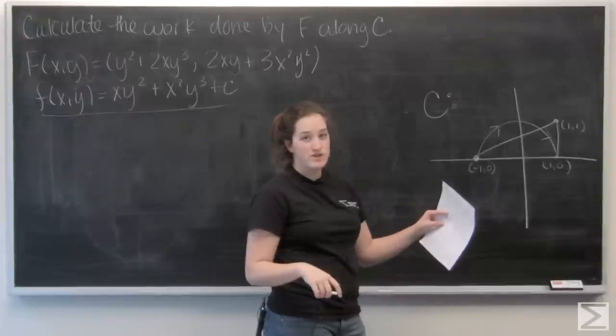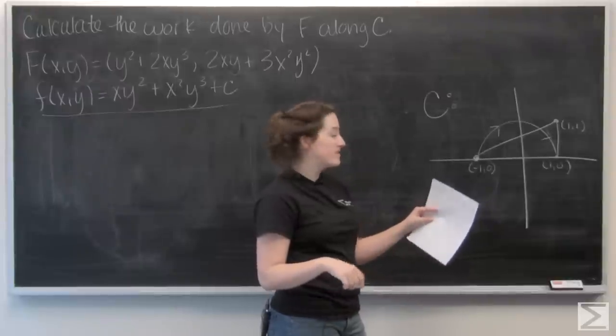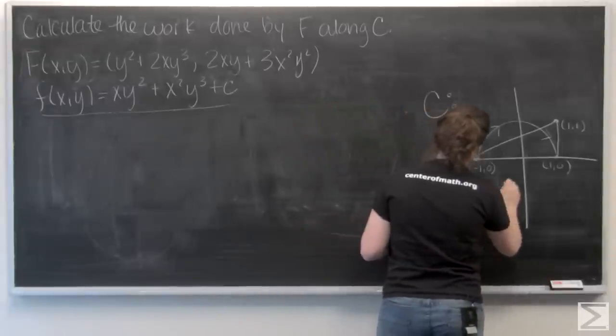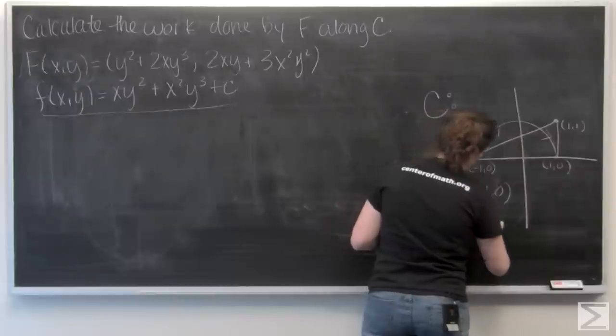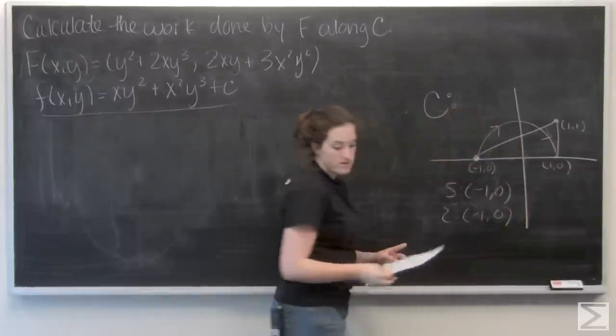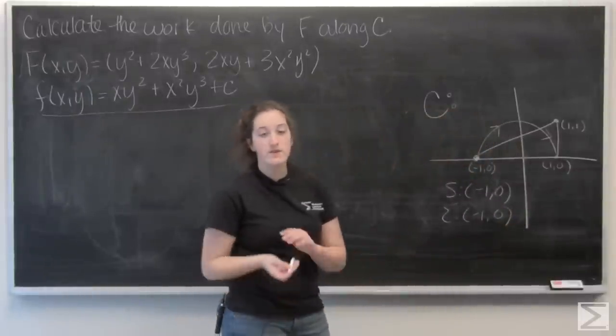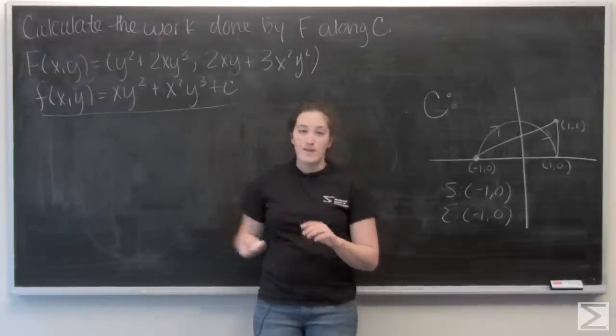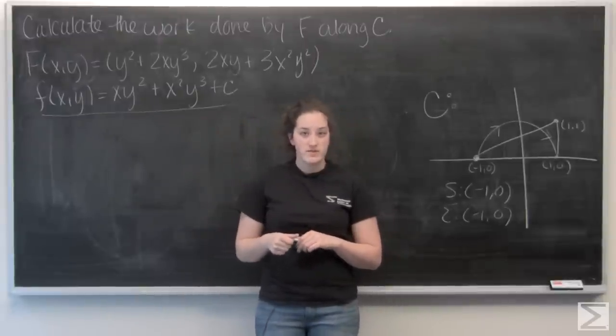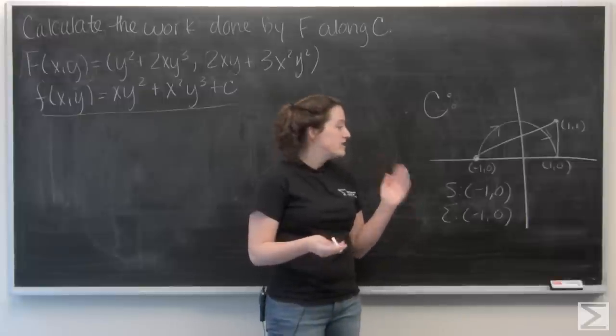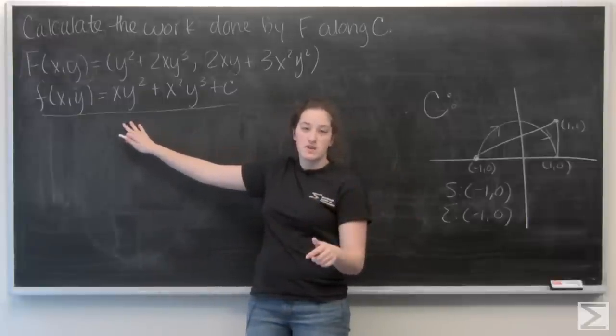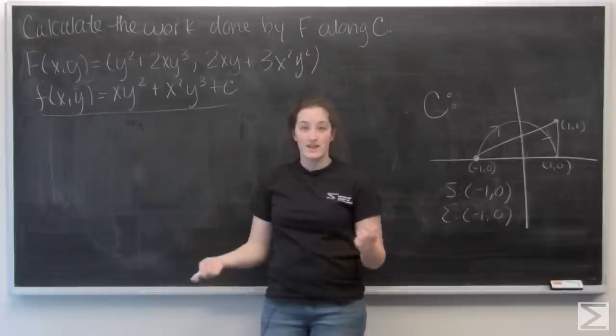So the start and the end point on this curve are actually the same, and they're negative 1, 0. And let's recall, using the fundamental theorem of line integrals, that if my vector field is conservative, I'm just going to have the potential function value at the end point minus the potential function's value at the start point to find that line integral.